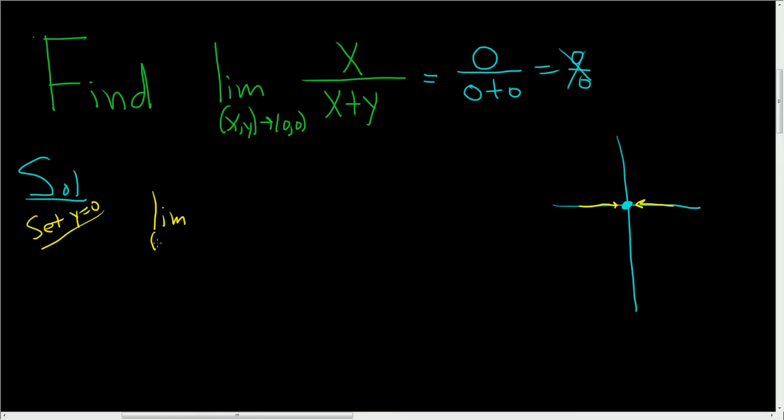So here we'll still have x, but I'm going to replace y with 0. We're approaching (0,0). Now you just plug in 0 into your function because we're setting y equal to 0 and traveling along the x-axis.